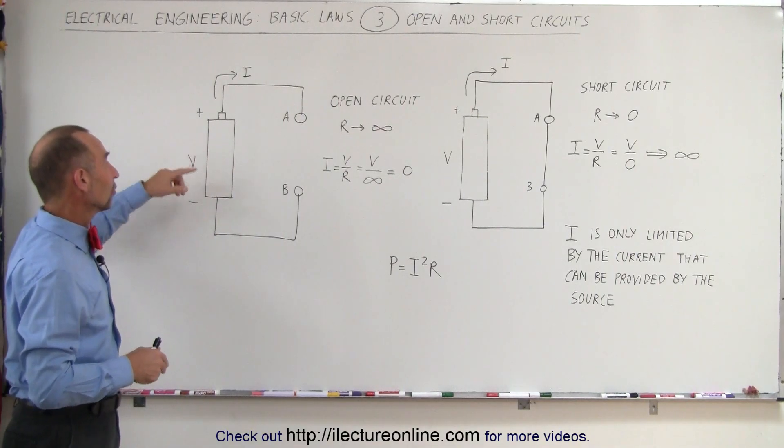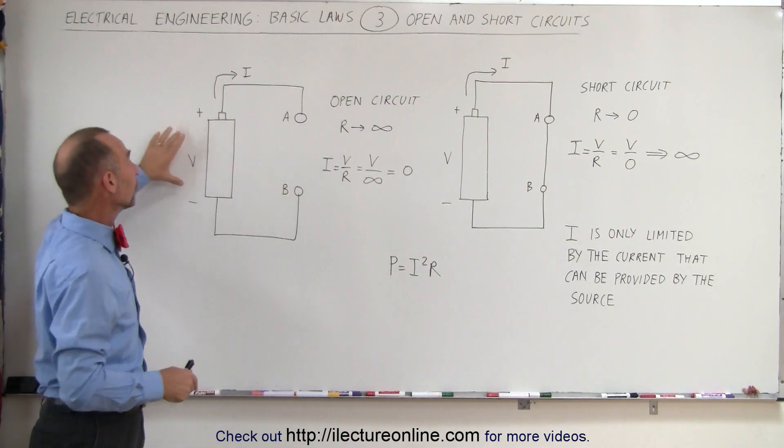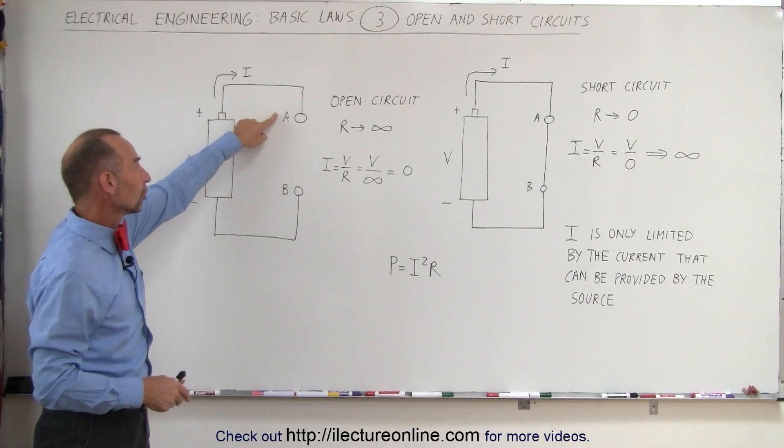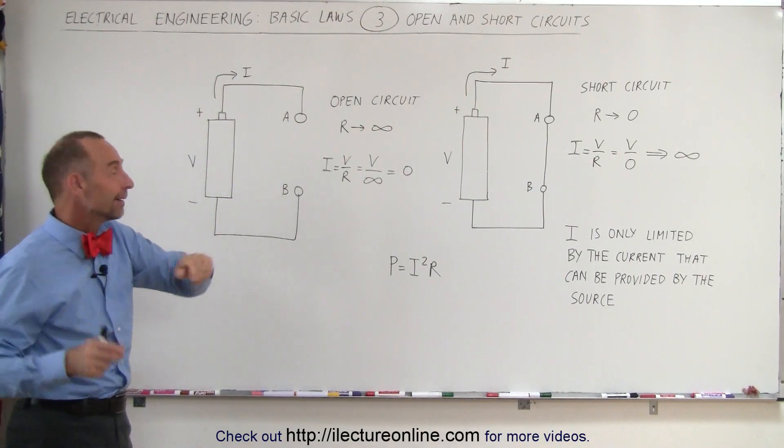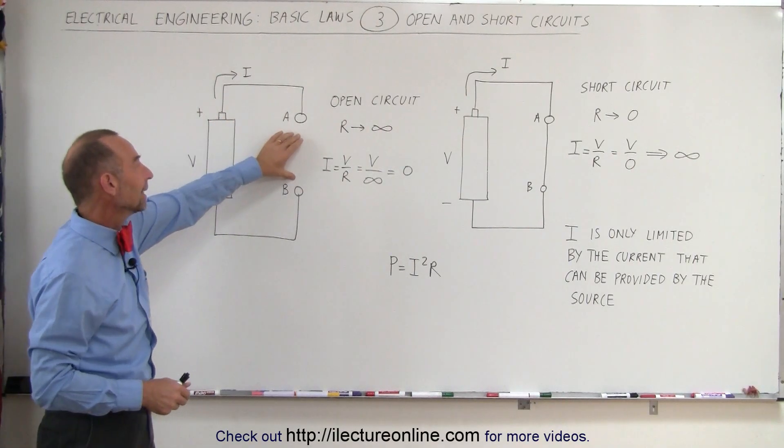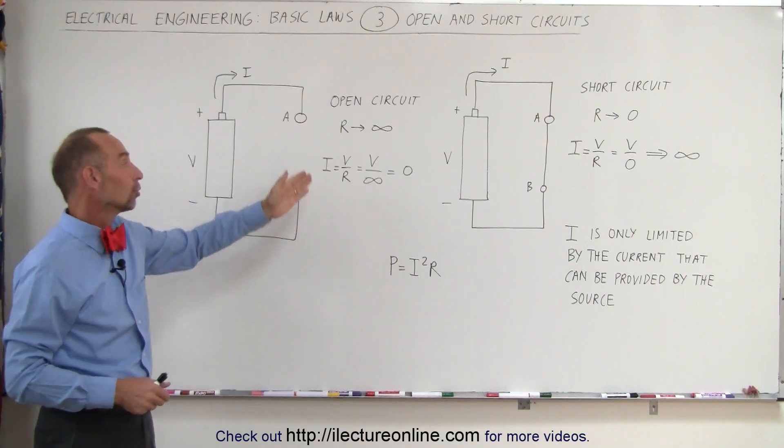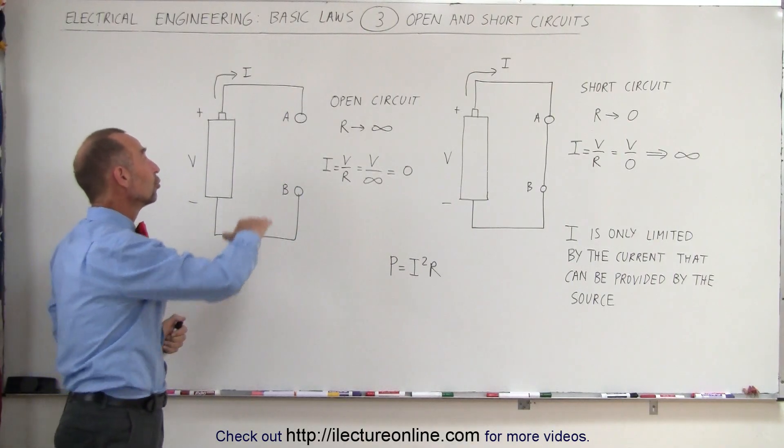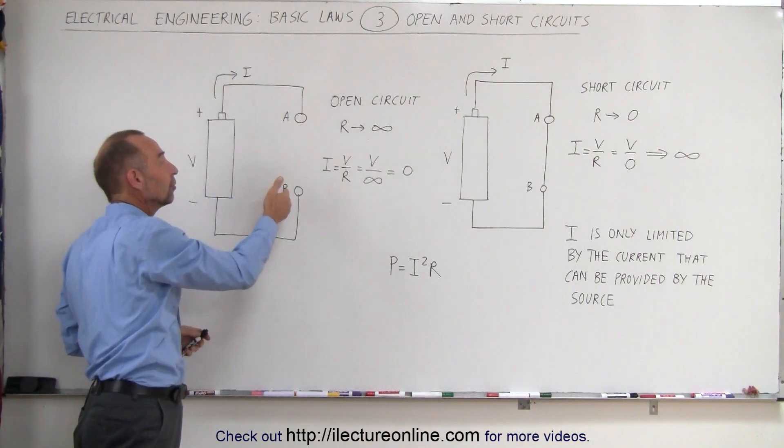An open circuit is a circuit connected to a voltage source, but the two terminals A and B at either end of the voltage source are not connected to each other. There's nothing connecting the two terminals, so there's no way current can flow from A to B.